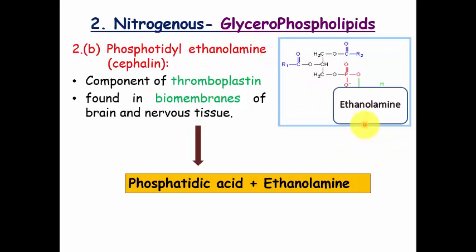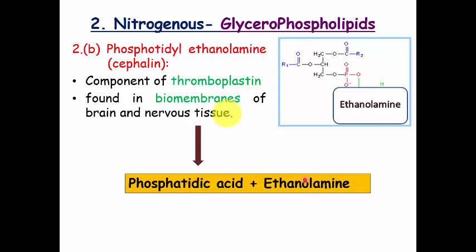The second nitrogenous glycerophospholipid is phosphatidylethanolamine, also known as cephalin. It is the same as phosphatidylcholine but instead of choline it contains ethanolamine as a substitute. Phosphatidic acid plus ethanolamine combine to form phosphatidylethanolamine, which is commonly found in the membranes of the brain and nervous tissues.